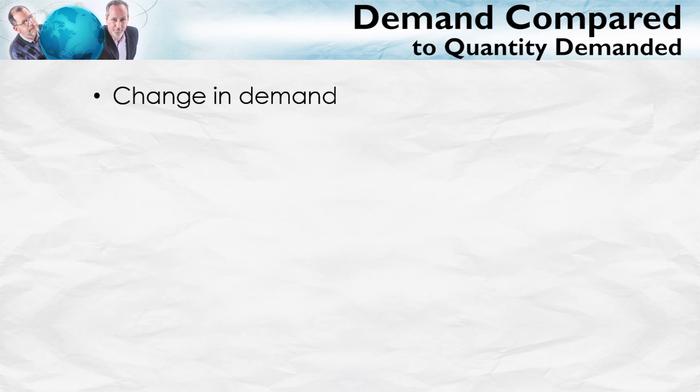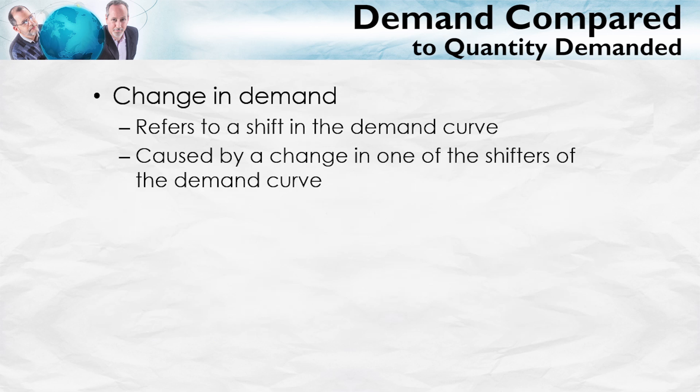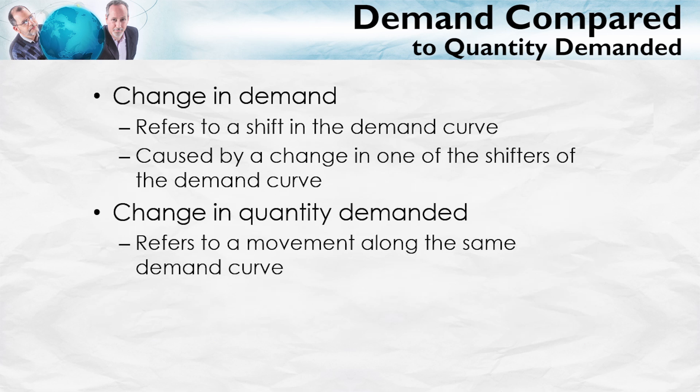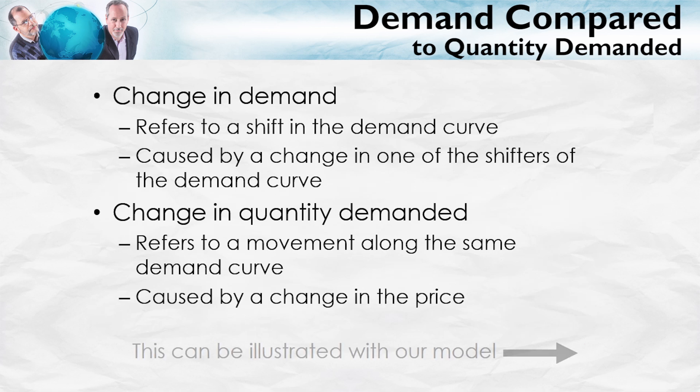A change in demand refers to a shift in the demand curve. As we know, a change in demand, a shift in the demand curve, is caused by one of the shifters: income, population, changes in the prices of substitutes and complements, and so forth. A change in quantity demanded refers to a movement along a fixed demand curve, and that's caused by a change in price. Let's illustrate with the model.